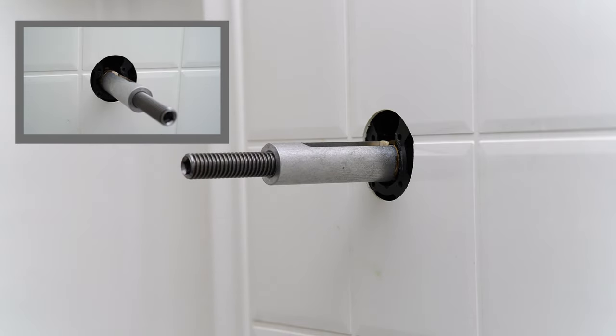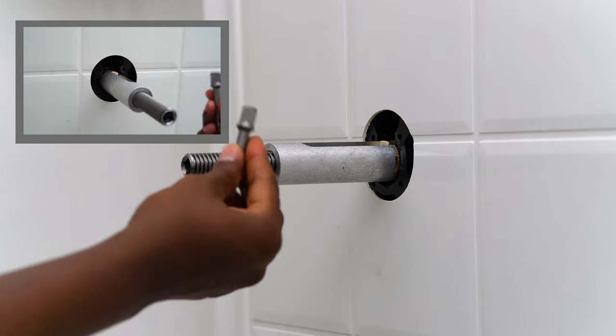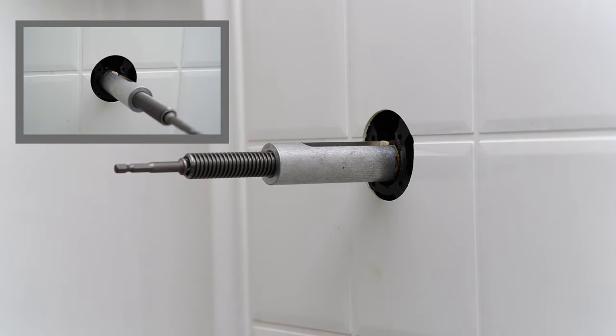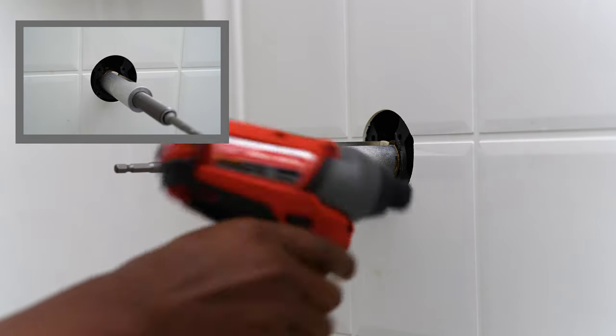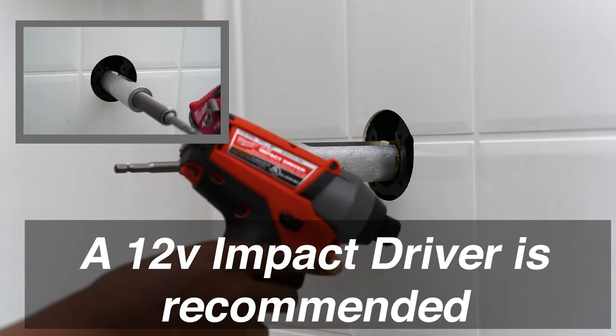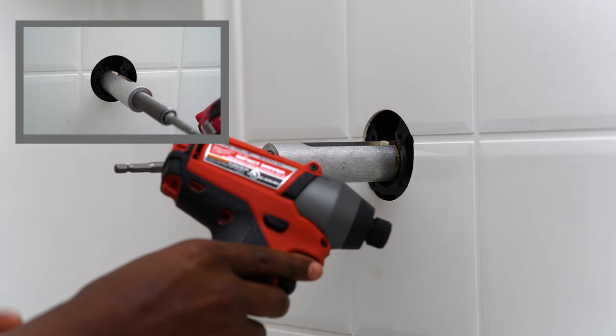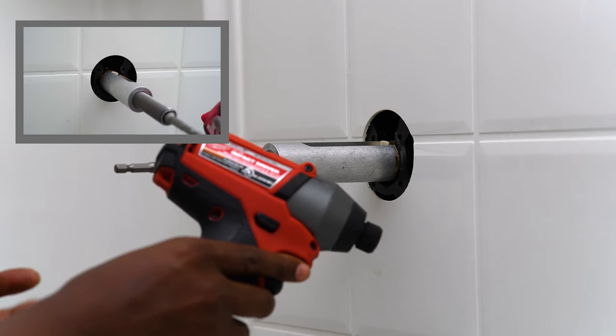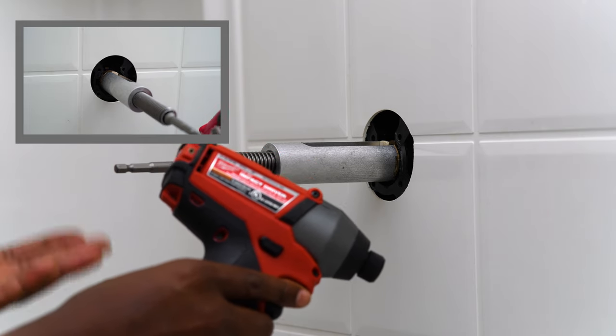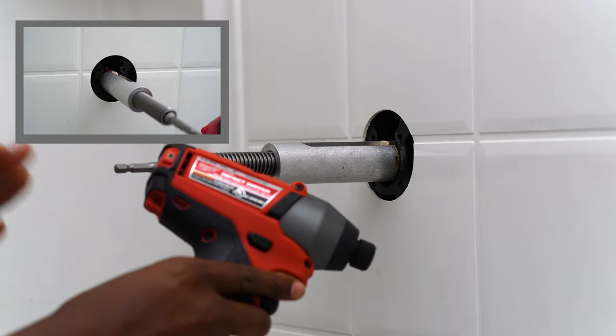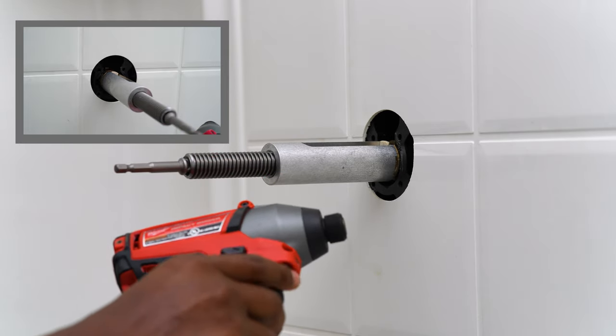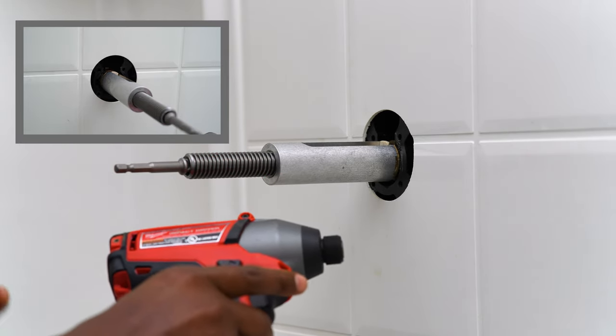But if you don't want to do that, this is also included and you can use this and you can use a power tool. It is suggested that you use a 12 volt instead of an 18 volt power tool just because if there's too much power and you don't take it slow, you have the tendency to rip out the brass piece. So use a 12 volt, preferably something with a variable trigger so you can control how much force you're using.